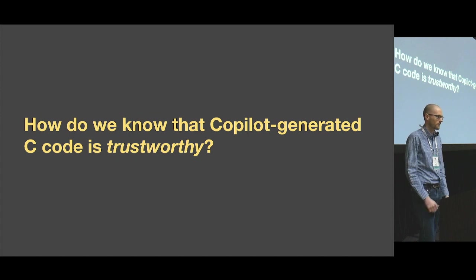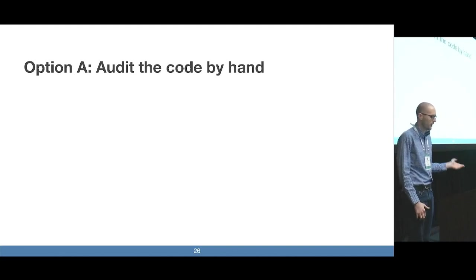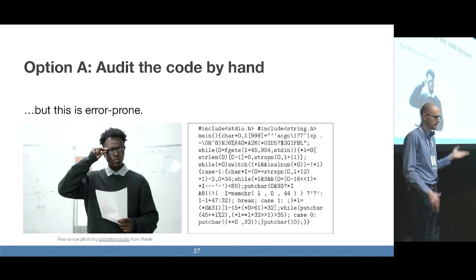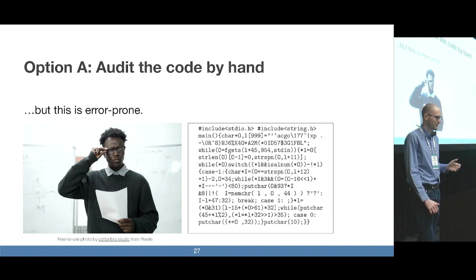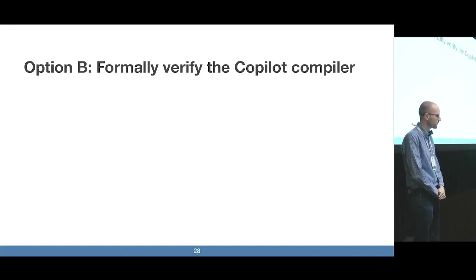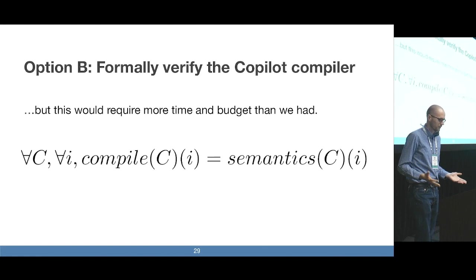We came up with three possible approaches. One approach is having a human whose job it is to audit the code by hand — but humans are certainly not without faults. Another option is to formally verify the entire Copilot compiler, as has been done with CakeML, CompCert, and Velus. But the problem is that this is a very time- and labor-intensive process, typically taking multiple years with many people, and we simply did not have that at our disposal.